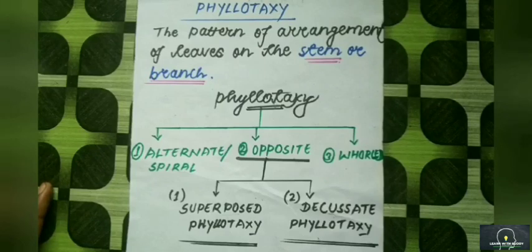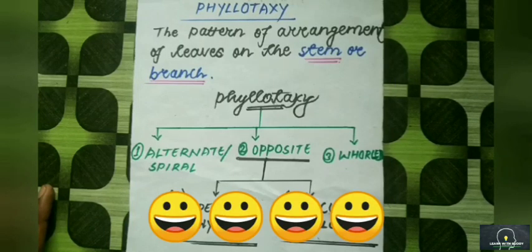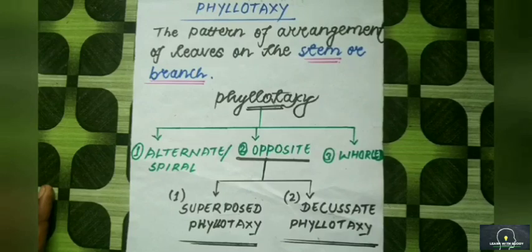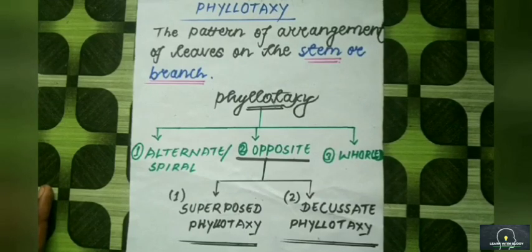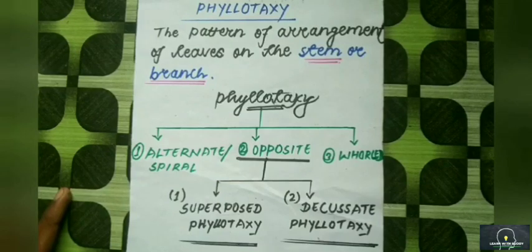Hey guys, this is Asit Kama Das, welcome to our channel Learn with Buddy. Today we are going to discuss phyllotaxy, which is the important sub-topic of the morphology of the flowering plants. Phyllotaxy is the arrangement of leaves either on the stem or branch. Phyllotaxy aims to position the leaves to get maximum sunlight.